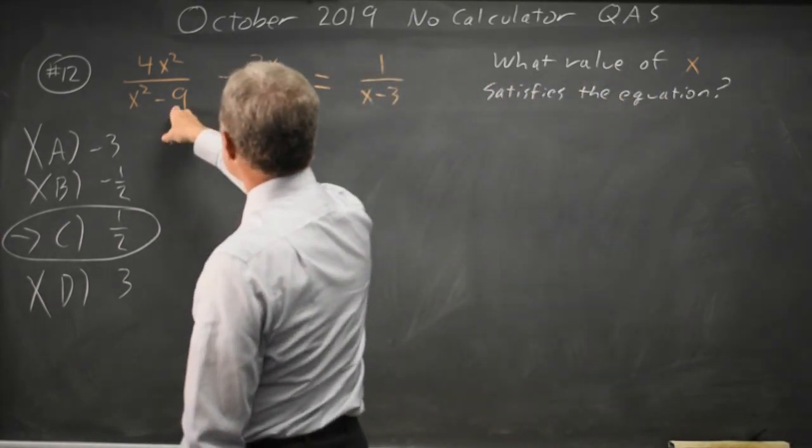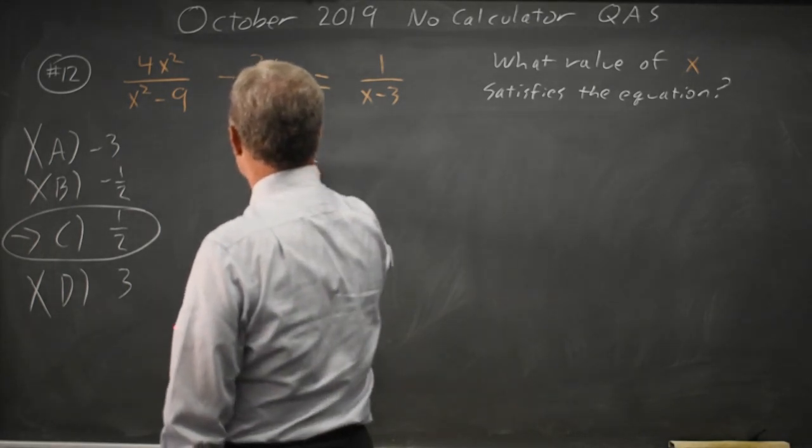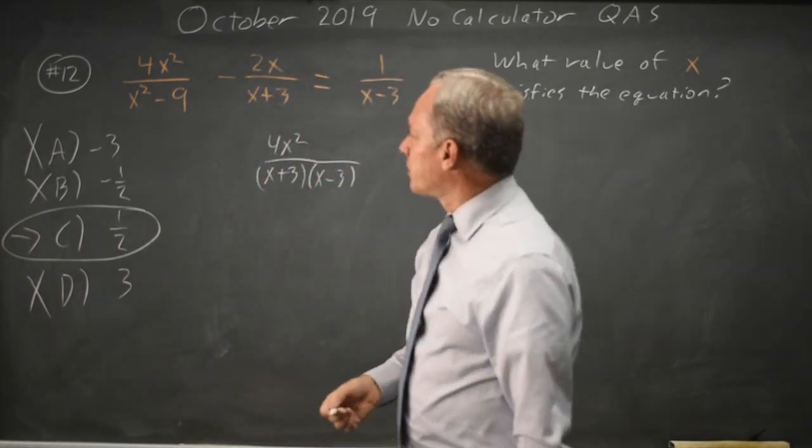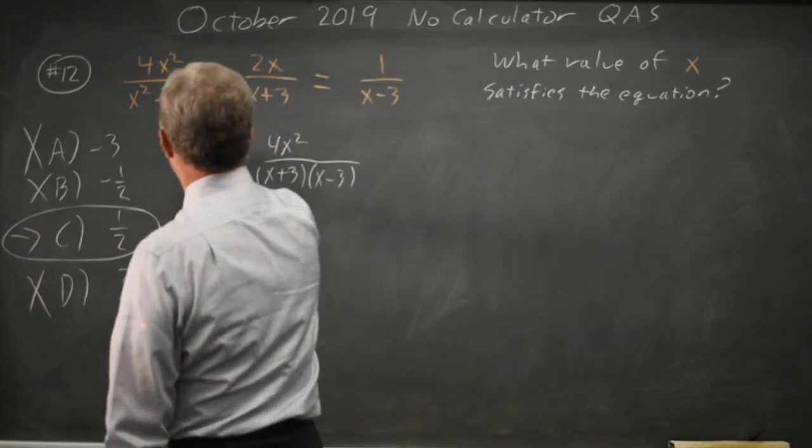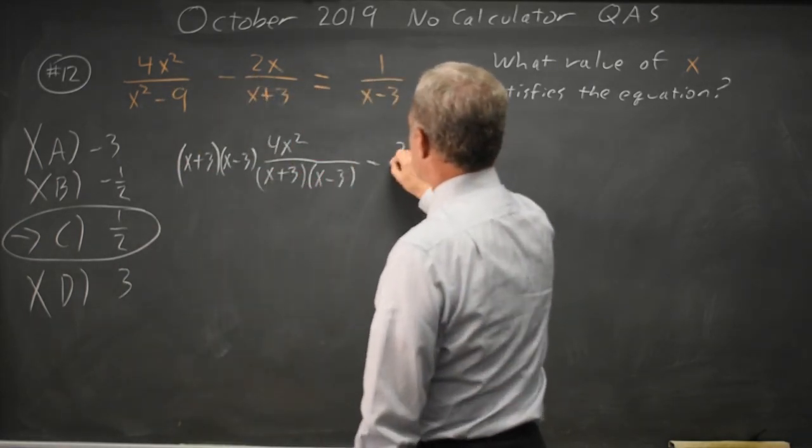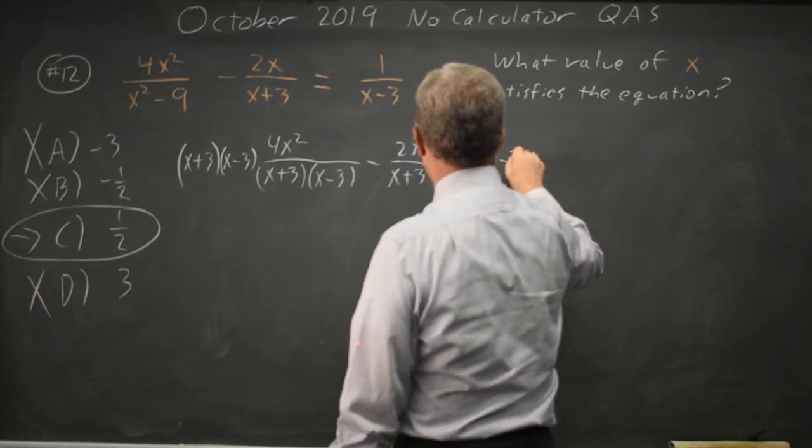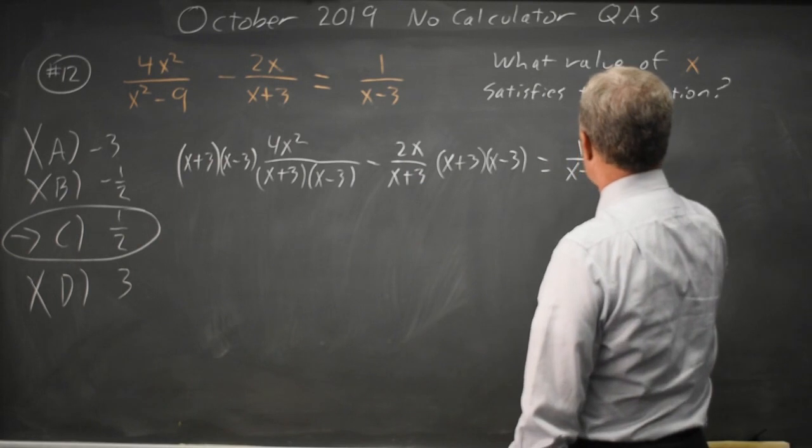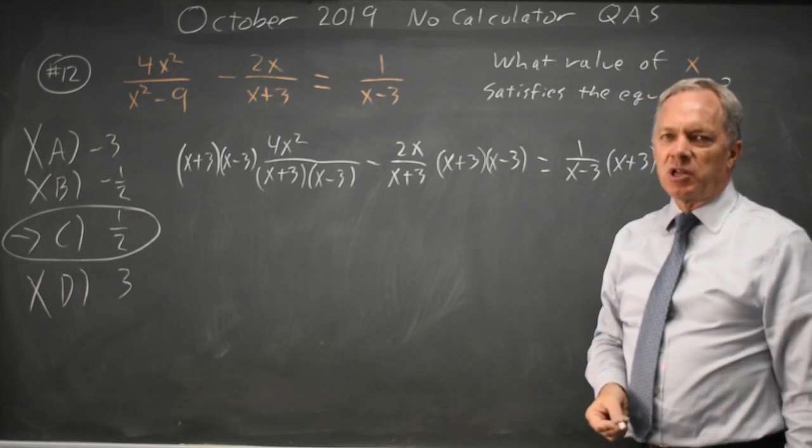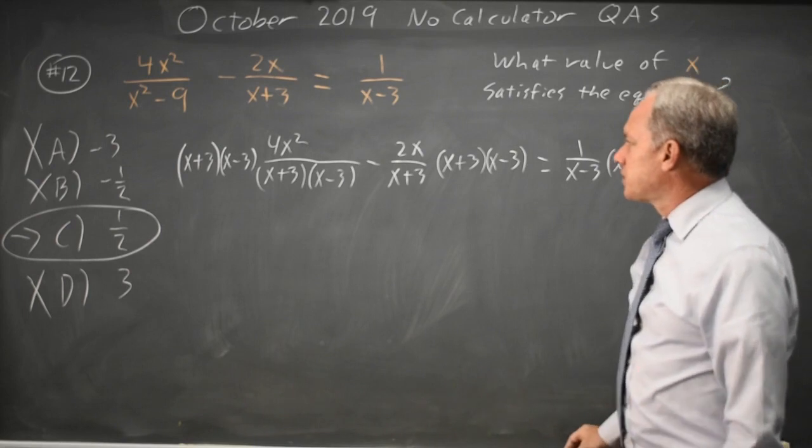So I have, this is x plus 3, x minus 3. I'm going to multiply both sides by x plus 3, x minus 3, so I'll have no more fractions. It's often worth the extra time to write x plus 3, x minus 3 with each fraction, so we don't mess up when canceling.